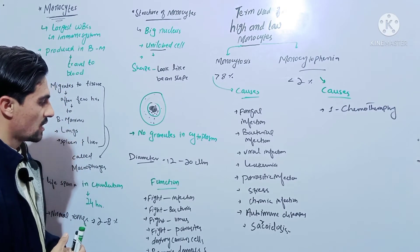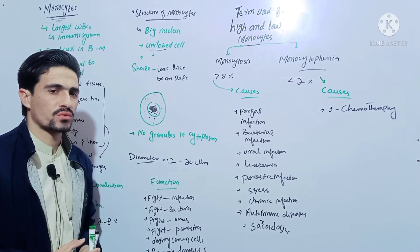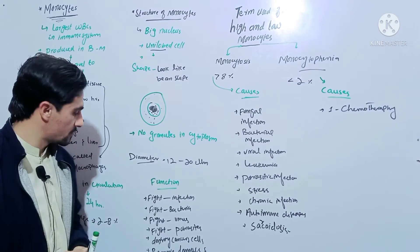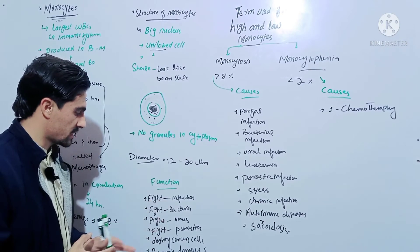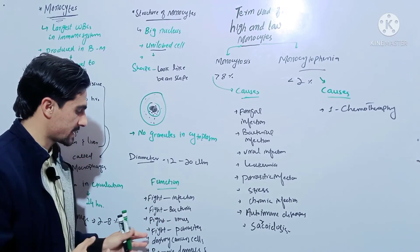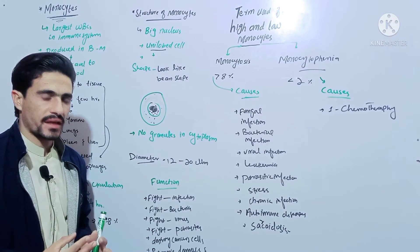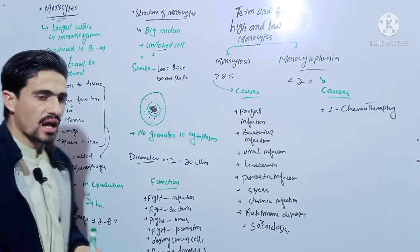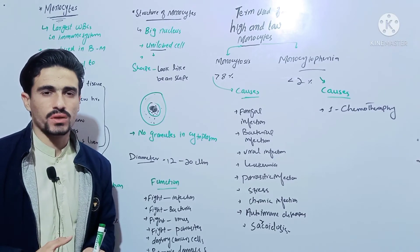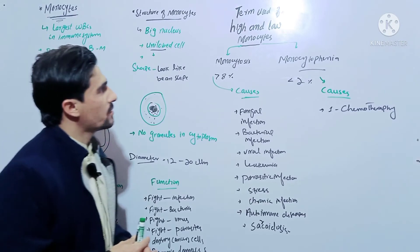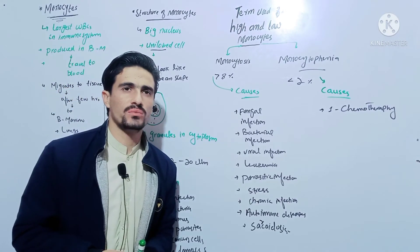The diameter of monocytes is around about 12 to 20 micrometers. Now come to the functions — monocytes play a basic role in fighting against bacterial infections, fighting against viruses, fighting against parasites. They also destroy cancer cells in the human body and remove damaged or dead tissue in the human body.